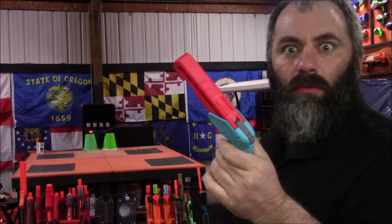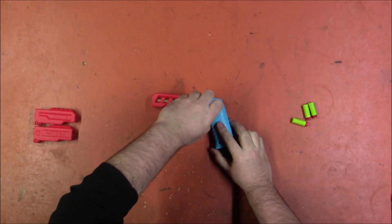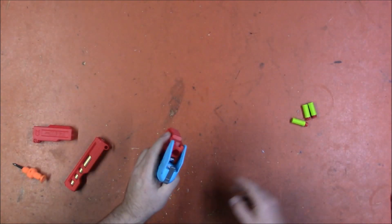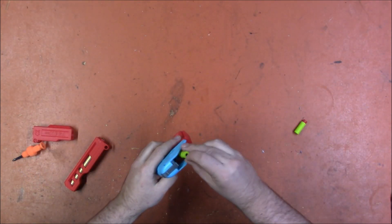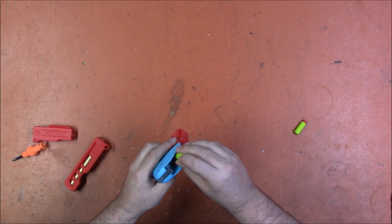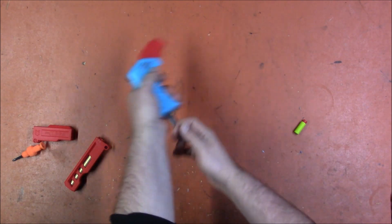Alright. Let's try a different barrel. Let's try the inline clip barrel this time. Alright. Let's see what kind of numbers we get with this. Loading two darts. Let's go.